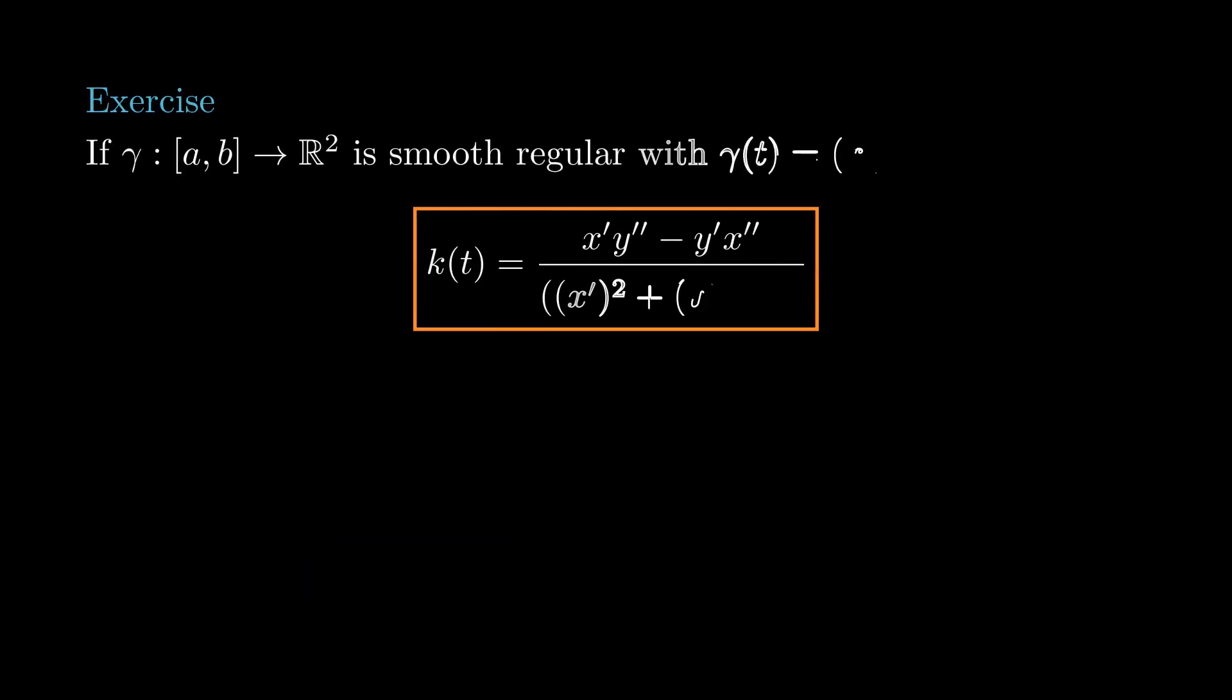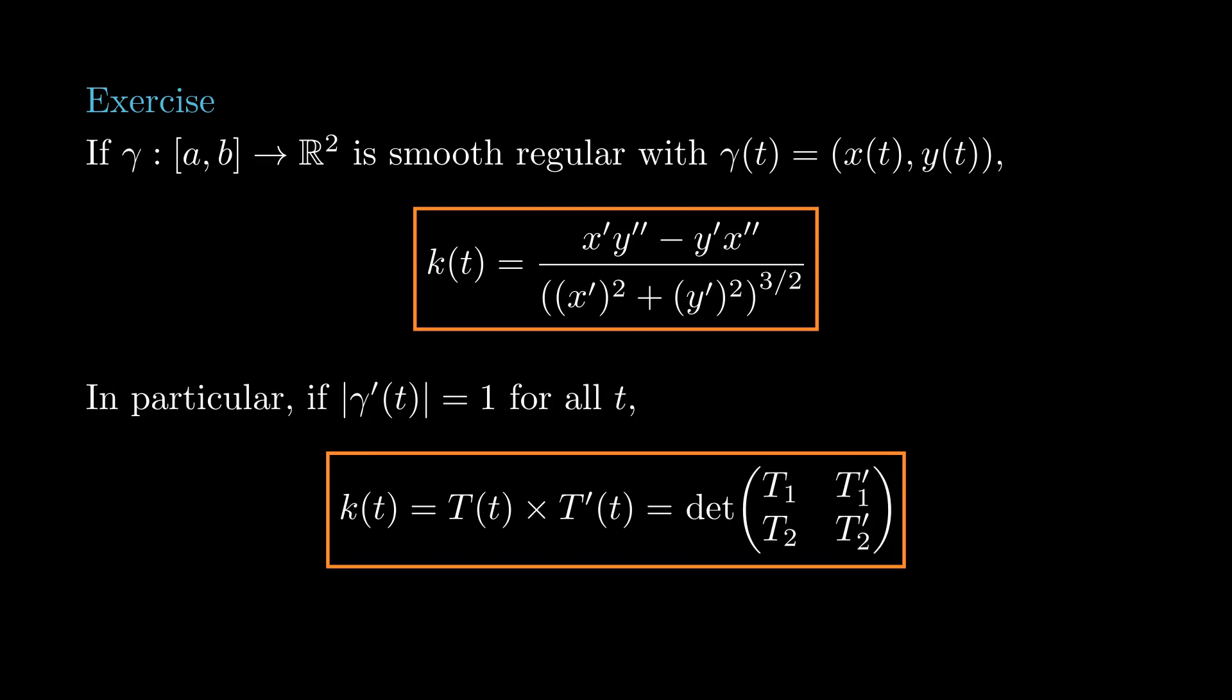For parametrizations that are not by arc length, I leave it as an exercise to check that the signed curvature can be computed directly with this formula, which reduces to an even simpler one when the curve is parametrized by arc length. So in practice, even though we need the angle function theta to define the signed curvature, we don't need theta to compute k.